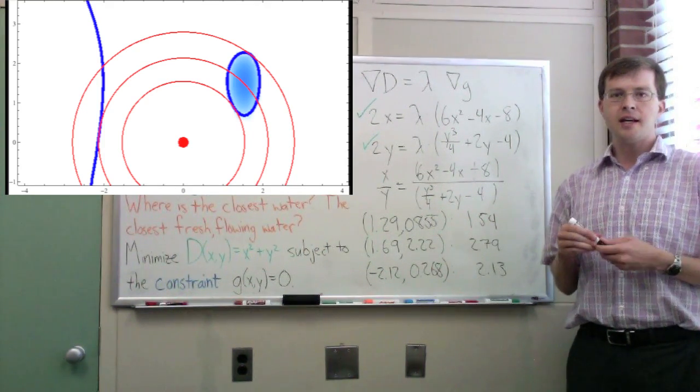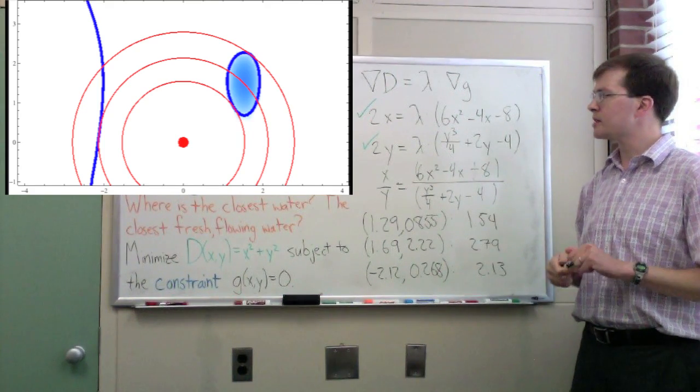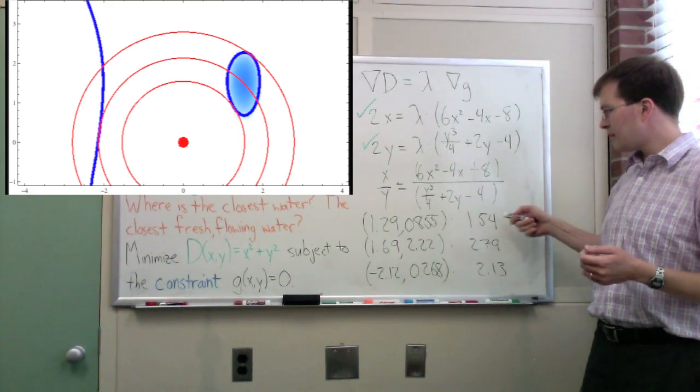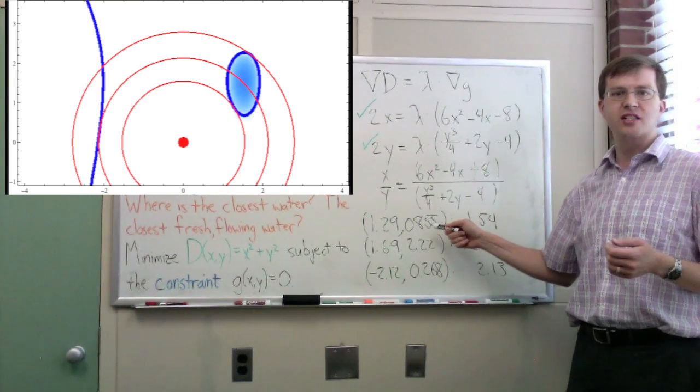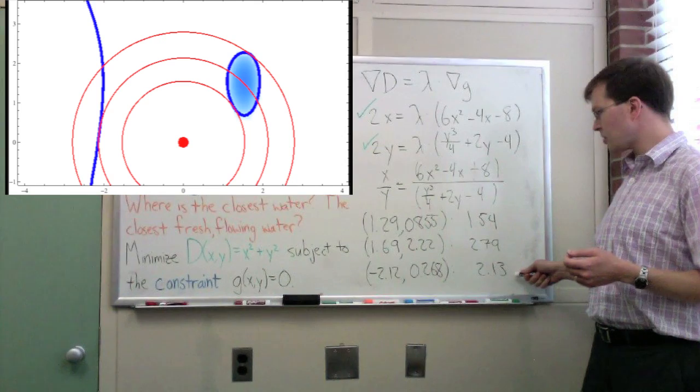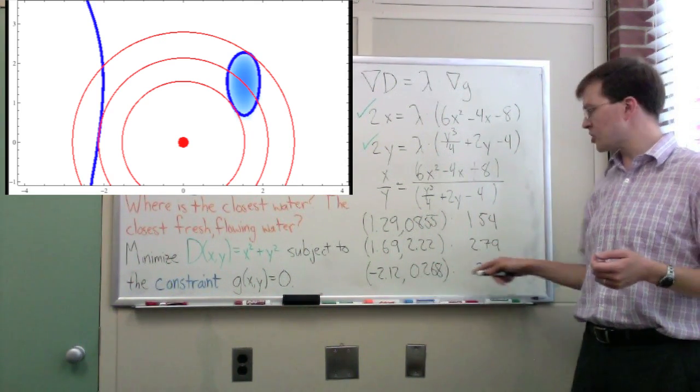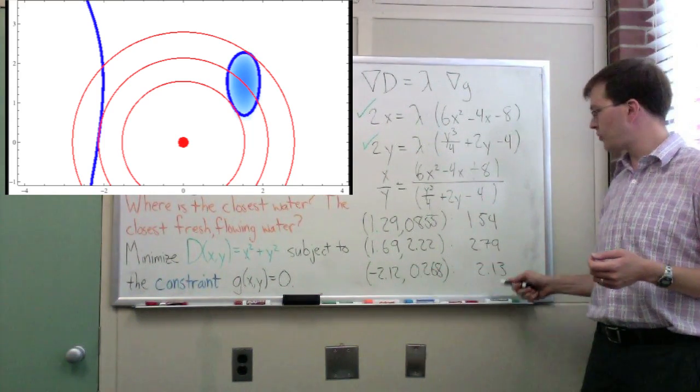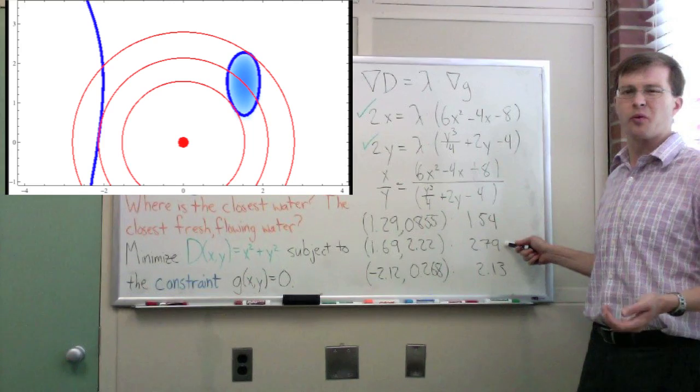And you can immediately see in the graph that has those concentric circles, you can immediately see that the smallest circle, 1.29 and 0.855 seems about right for where that circle touches the lake, the near side of the lake. The next closest circle, the next small circle, is at a negative x, and that's because it's the one that touches the river. If she wants river water, she's got to go to that point, this xy shown there. And then finally, here's the one that goes to the far side of the lake.